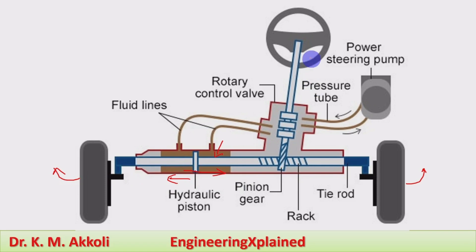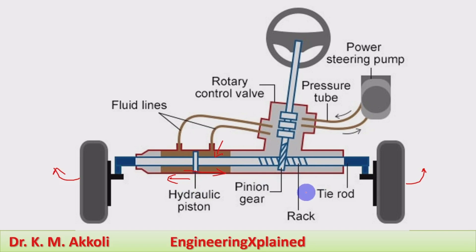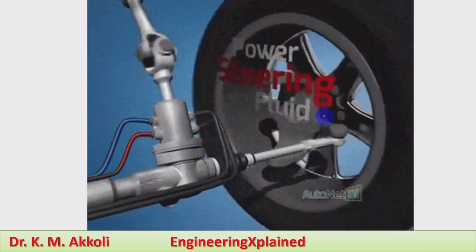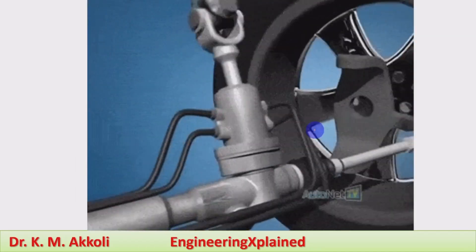Then the turning of the wheel takes place in the other direction. By operating the steering wheel, which operates the rotary control valve, we can turn the wheel with less effort as pressurized fluid is supplied to the system. This is how the power steering operates using hydraulic fluid. You can see the animation of this here.